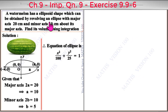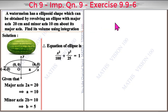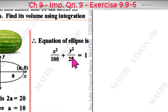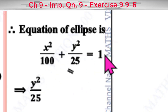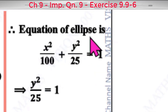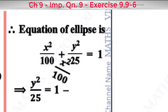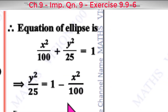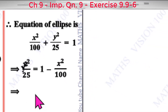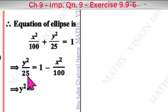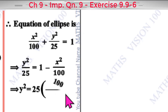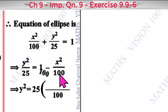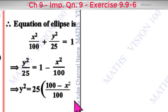Revolving about the x-axis (major axis), we use the volume formula V = π∫y² dx. From the ellipse equation, y²/25 = 1 − x²/100, so y² = 25(1 − x²/100), which simplifies to y² = 25 − x²/4.